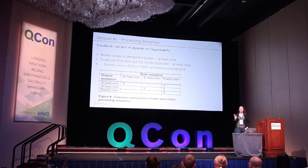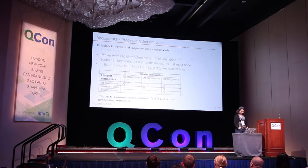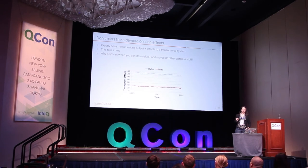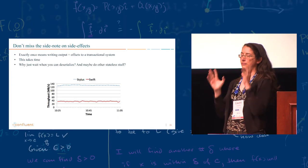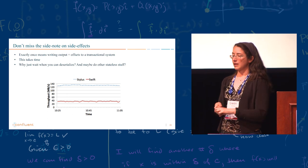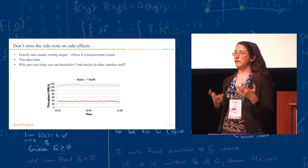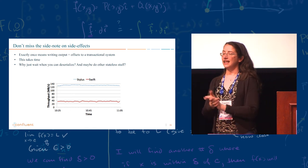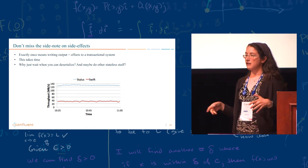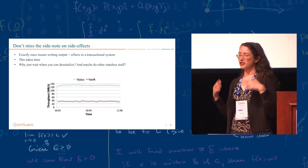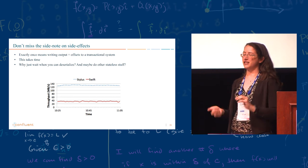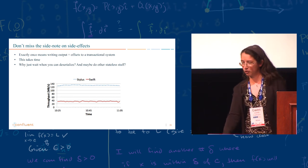And then again, another interesting note on side effects. If you want to do exactly once, it means that you have to write the state and the output and the offset and the checkpoint and everything to a transactional system. So things will happen in one transaction. This takes a long time. And why just wait during this time if you can do some stuff that is stateless and has no side effects? For example, deserialization is stateless and takes tons of CPU and a lot of effort. So let's just keep on doing that while stuff is getting written to a transactional system. That's a pretty cool optimization.